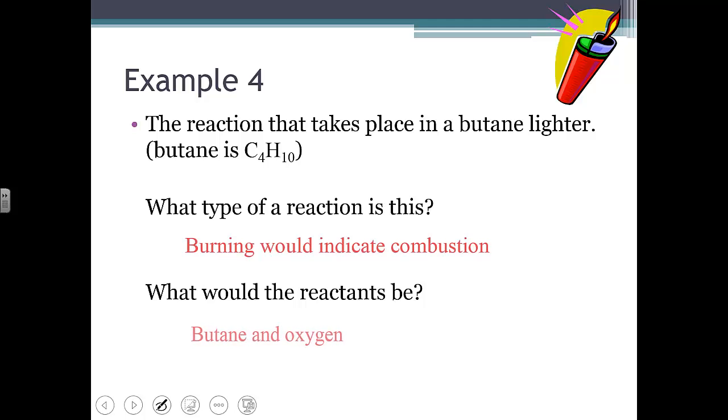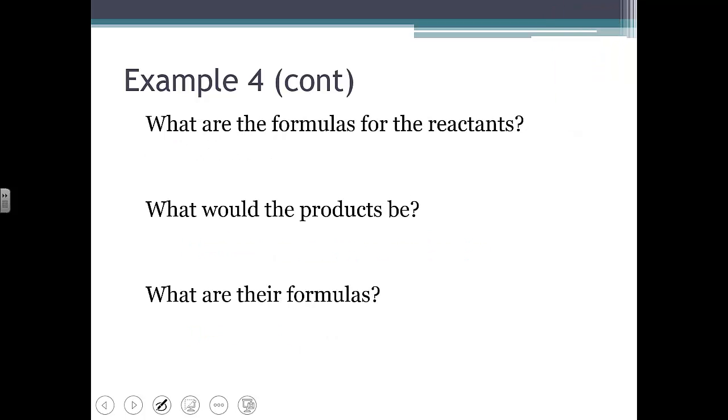What would the reactants be? They mentioned butane - obviously that's one. But are there any others when we're burning something? You need to remember oxygen's always involved, even though it's not mentioned. So butane and oxygen would be our two reactants. The formulas for those reactants - butane was given to us, and oxygen is a diatomic, so C₄H₁₀ and O₂. And the products, when we have combustion, we always assume it's complete combustion unless they tell us it's in limited oxygen. So we're going to assume the products will be carbon dioxide and water. The formulas for those are CO₂ and H₂O.